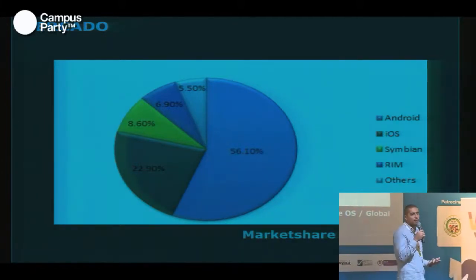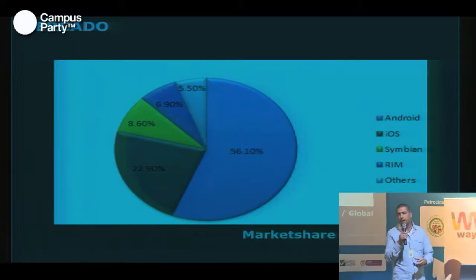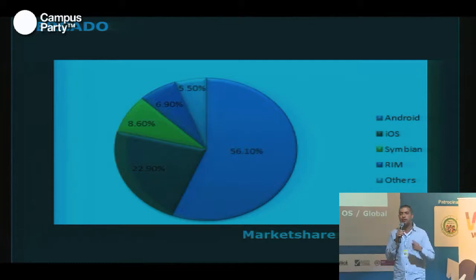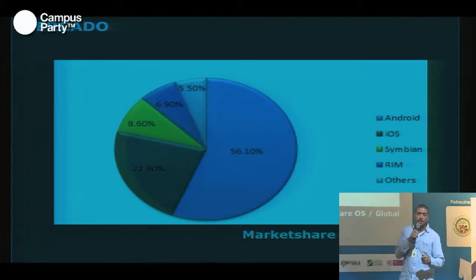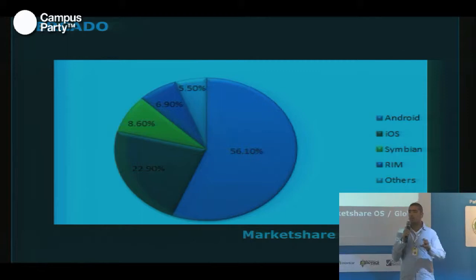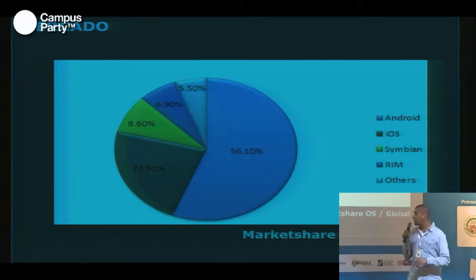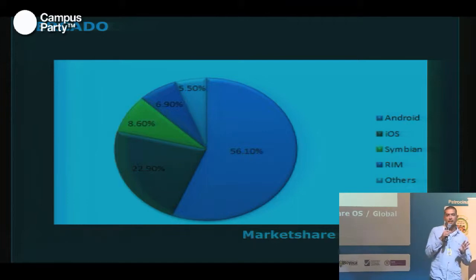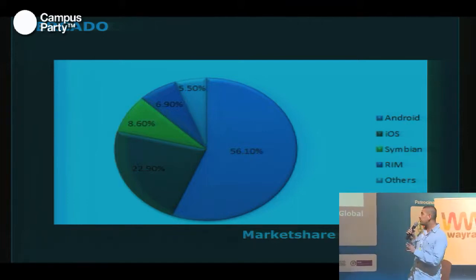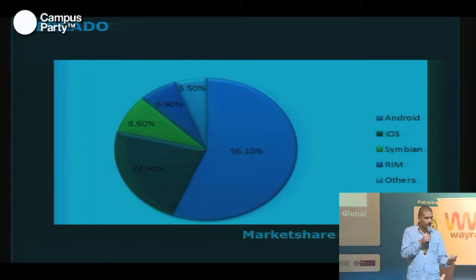Se calcula que hay aproximadamente 250 millones de dispositivos iPhone. De ahí para abajo encontramos otros sistemas operativos que han venido emergiendo o cayendo, como el caso de Nokia y BlackBerry, que han venido cambiando su sistema operativo. En términos globales, el contenido se consume en este momento prácticamente a través de dispositivos Android e iPhone a nivel mundial.